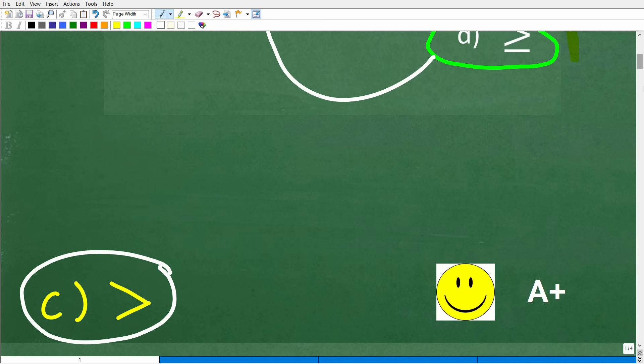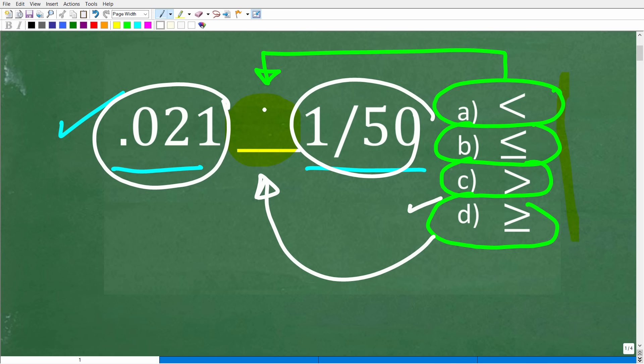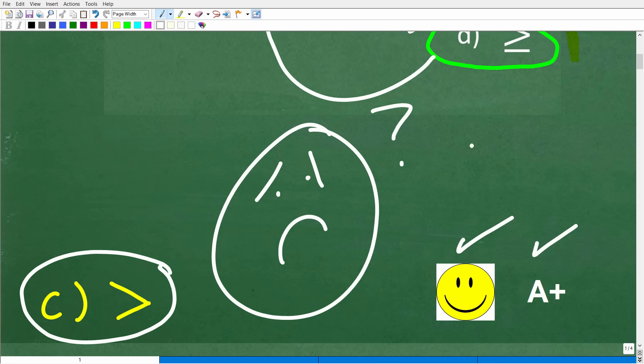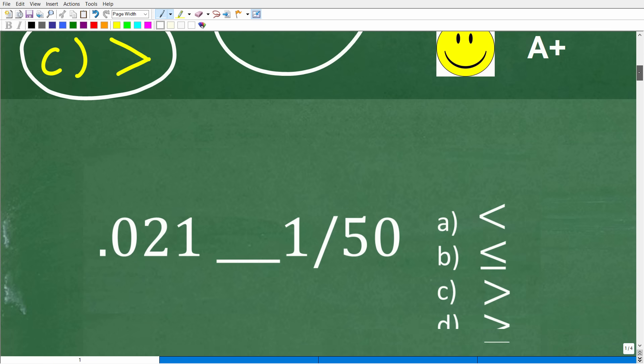But if you answered with D, technically, that is correct as well. Greater than or equal to, this is a true statement. So if you answered with C or D, I'm going to give you full credit. But C is actually the best answer. If you got that right, well, you definitely get a happy face and an A+. And if you're like, I totally forgot all this stuff in school, matter of fact, I don't even remember what less than or greater than is, well, no big deal. Let's go ahead and get into that right now.